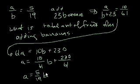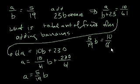Well, both of these are equal to a, so we could set them equal to each other, and we get 5 over 19b is equal to 10 over 61b plus 230 over 61. And we solve for b.